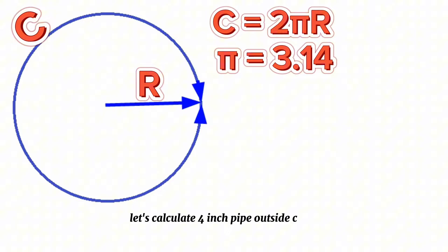For example, let's calculate the 4-inch pipe outside circle circumference. We know the 4-inch pipe outside radius is 57 millimeters. If we write 57 instead of R, then C equals 2π57.